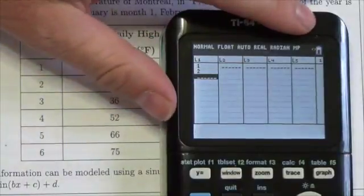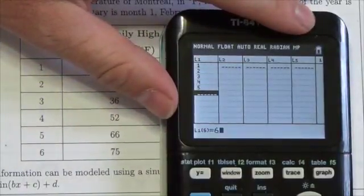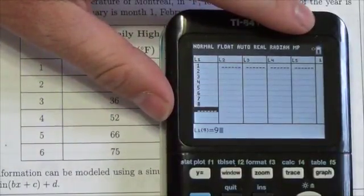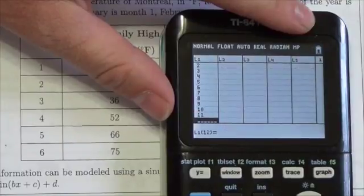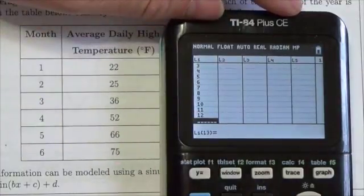This will be 1, enter, 2, enter, 3, enter, 4, enter, and so on until we've got the 12 months in.